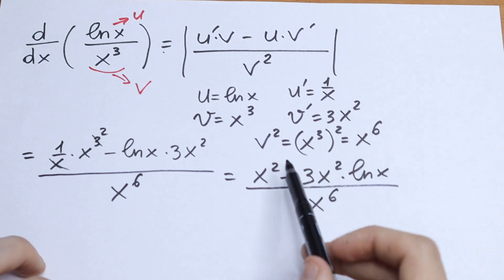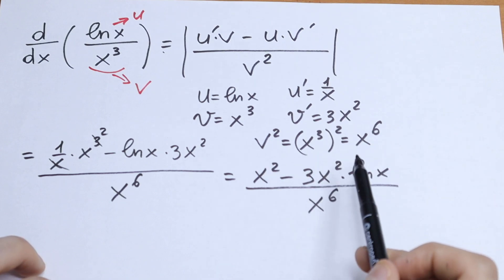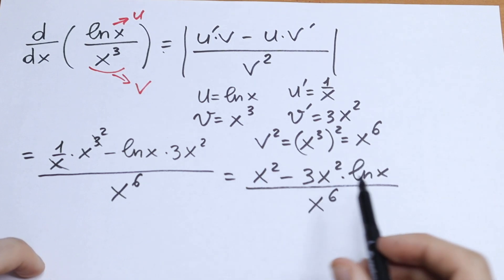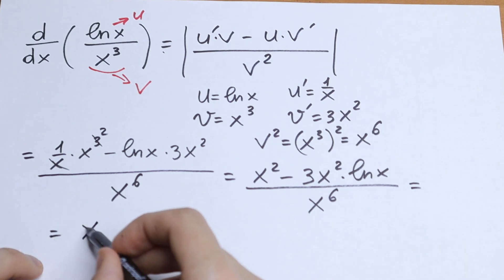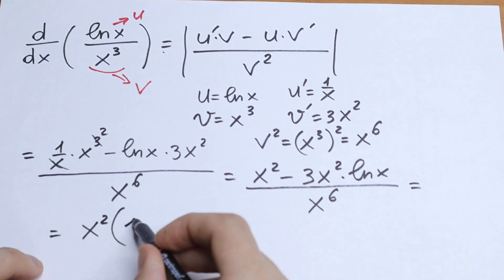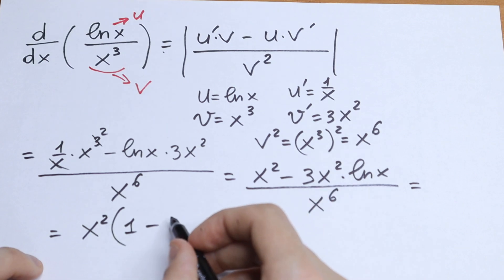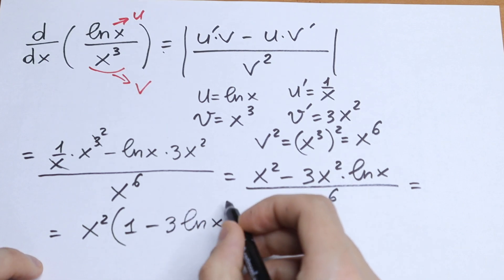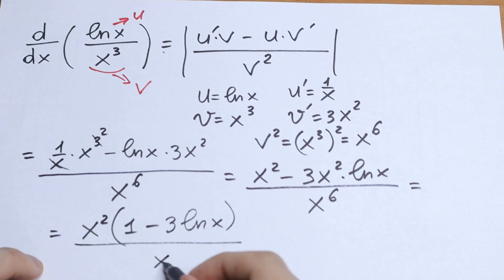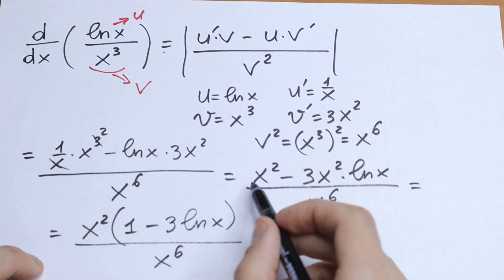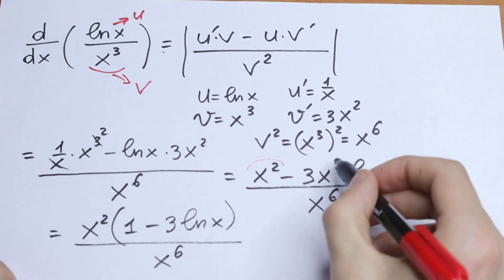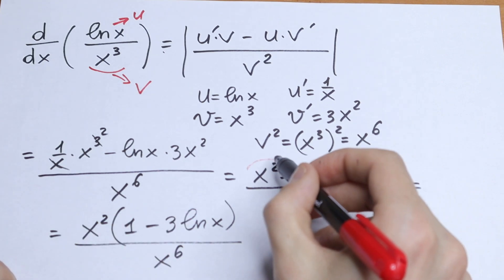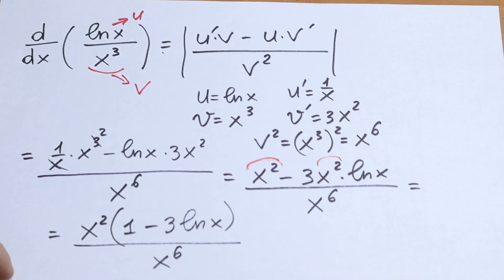As you can see, we have x squared in both terms in the numerator, so we can factor out x squared. As a result, we get x squared times the quantity 1 minus 3 natural log x, all divided by x to the sixth power. The x squared is the common factor in both terms.